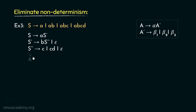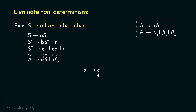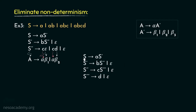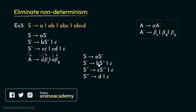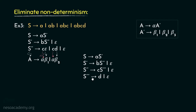Looking at S'' as the non-terminal A, from these two productions the C's are the alphas. Epsilon would be beta1 and D would be beta2. Proceeding with left factoring: S'' can be rewritten as C followed by S''', and S''' can be rewritten as Epsilon (beta1) or D (beta2). We also include the rule S'' → Epsilon. So the entire deterministic set becomes: S → A S'; S' → B S'' | Epsilon; S'' → C S''' | Epsilon; S''' → D | Epsilon.